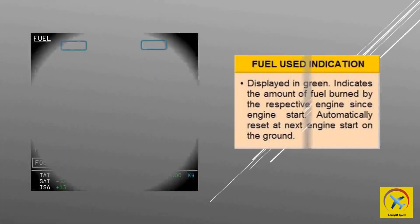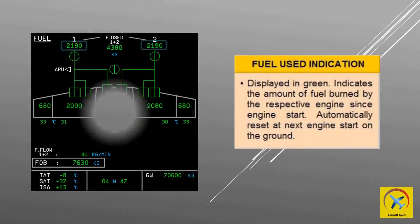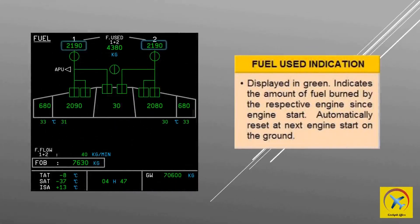Fuel used indication displayed in green indicates the amount of fuel burned by the respective engine since engine start. It automatically resets at the next engine start on the ground.